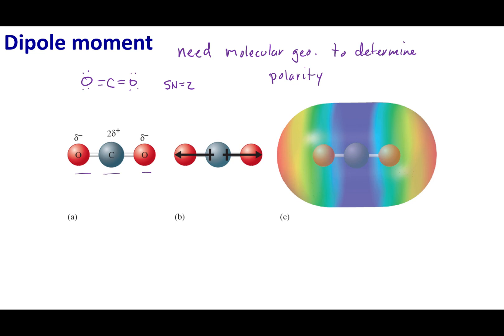Oxygen is more electronegative, so I'm going to draw my dipole arrow from my carbon to my oxygen. I'm going to do the same for the other oxygen — evaluating each bond and drawing dipole arrows. Both of these arrows are equal in strength but are in opposite directions, so my dipole arrows are going to cancel out. That means there is no net dipole, and we consider the molecule nonpolar.